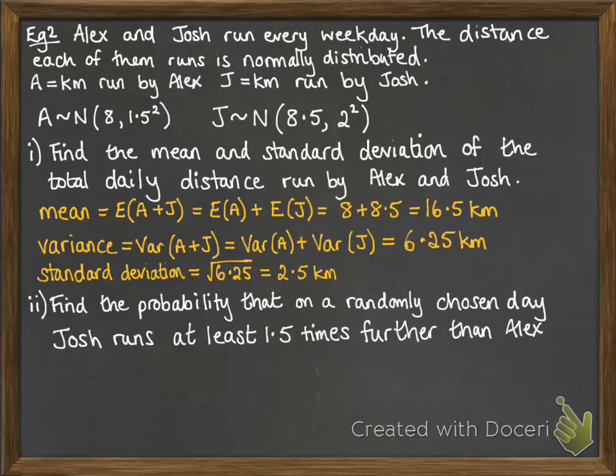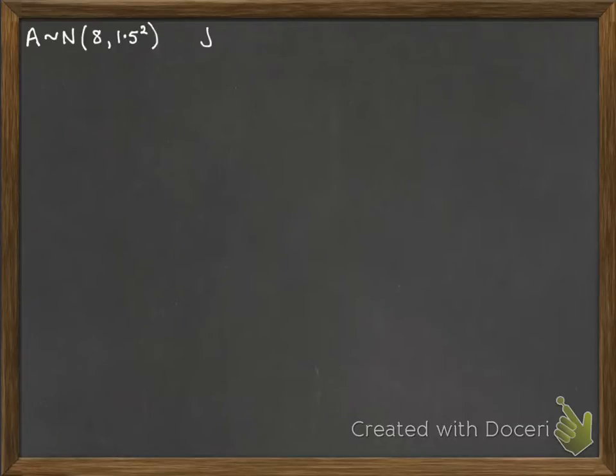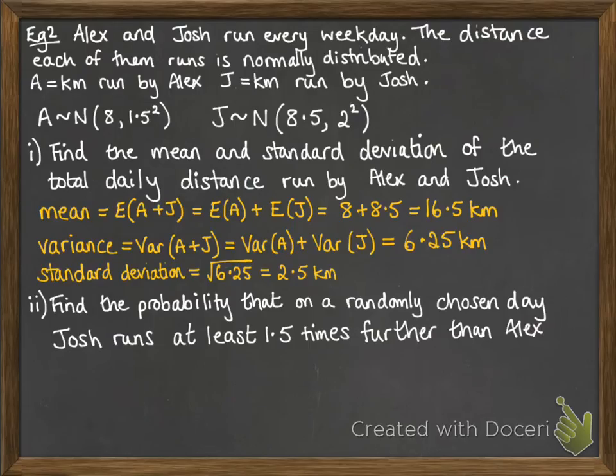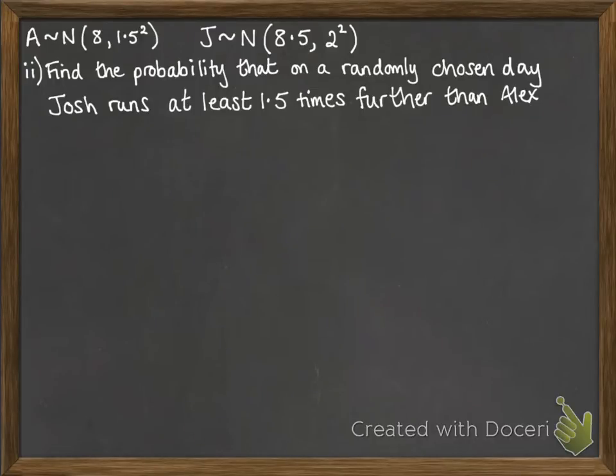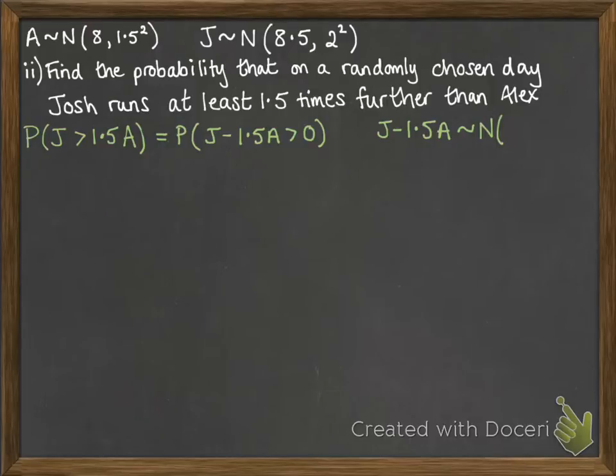The next bit is not going to fit on this slide. So I'm just going to copy it across to the next page. We've got to find the probability that on a randomly chosen day, Josh runs at least 1.5 times further than Alex. We're considering this. J has to be greater than 1.5 lots of A. You can also think of that as J minus 1.5A has to be bigger than 0. So now the distribution we're looking at is J minus 1.5A. We know that that's normally distributed since it's a combination of normal distributions.